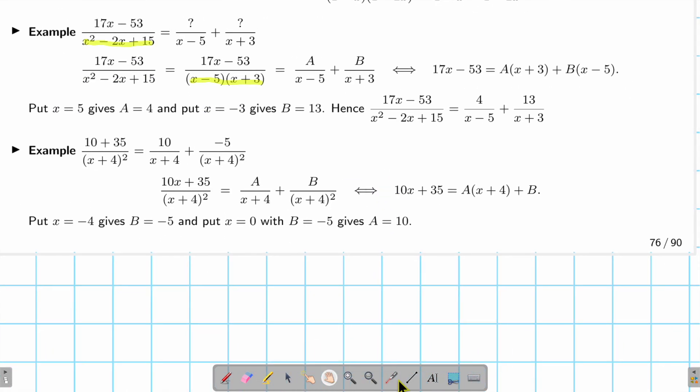Lastly, another example. Suppose I have an expression that looks like this. In this case, the partial fraction has the term and then the term squared. I want to find A and B. First I write this as A divided by (x+4) and B divided by (x+4)².